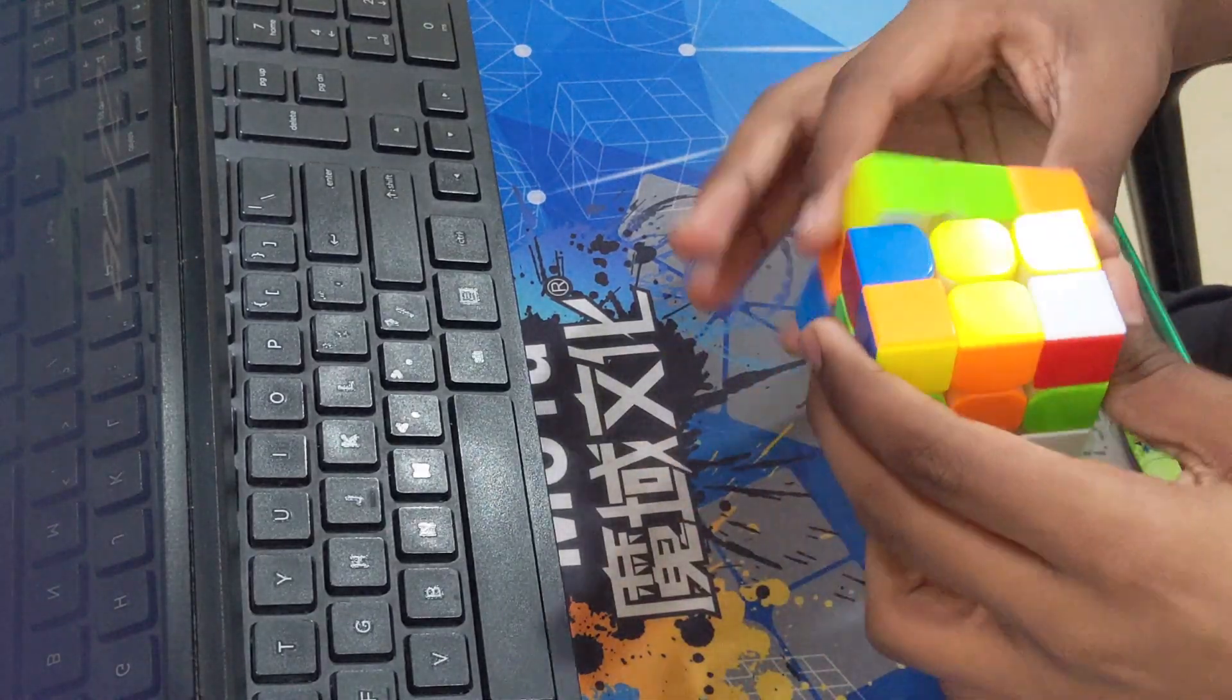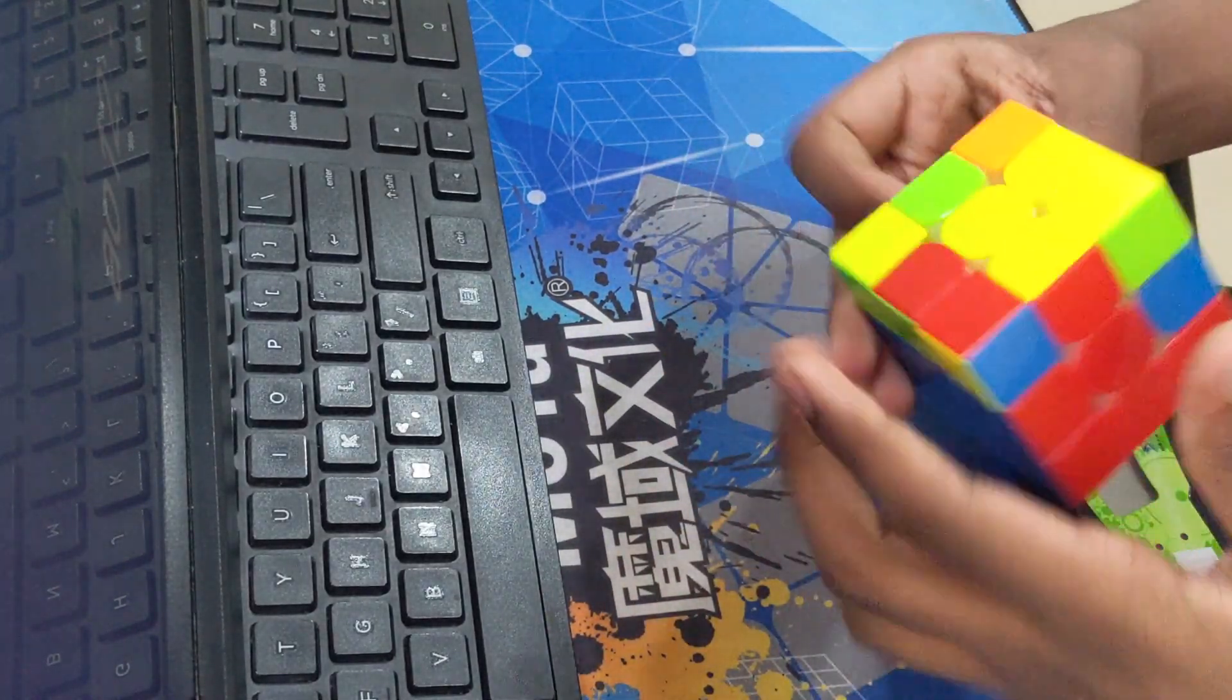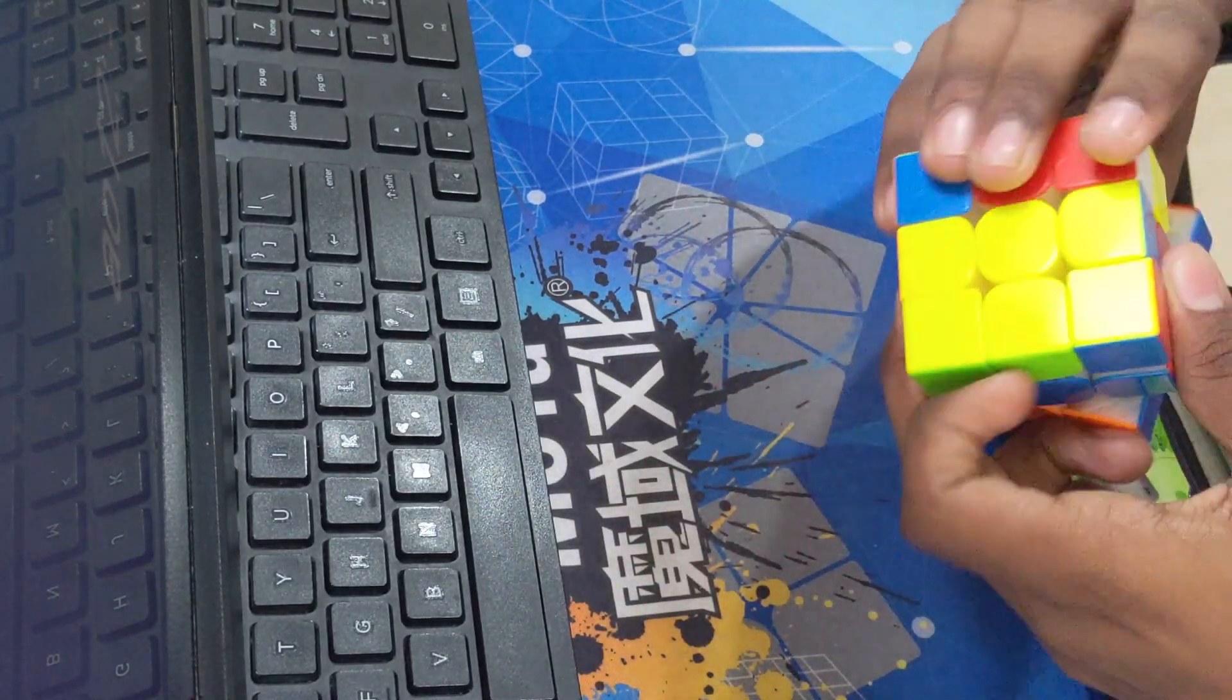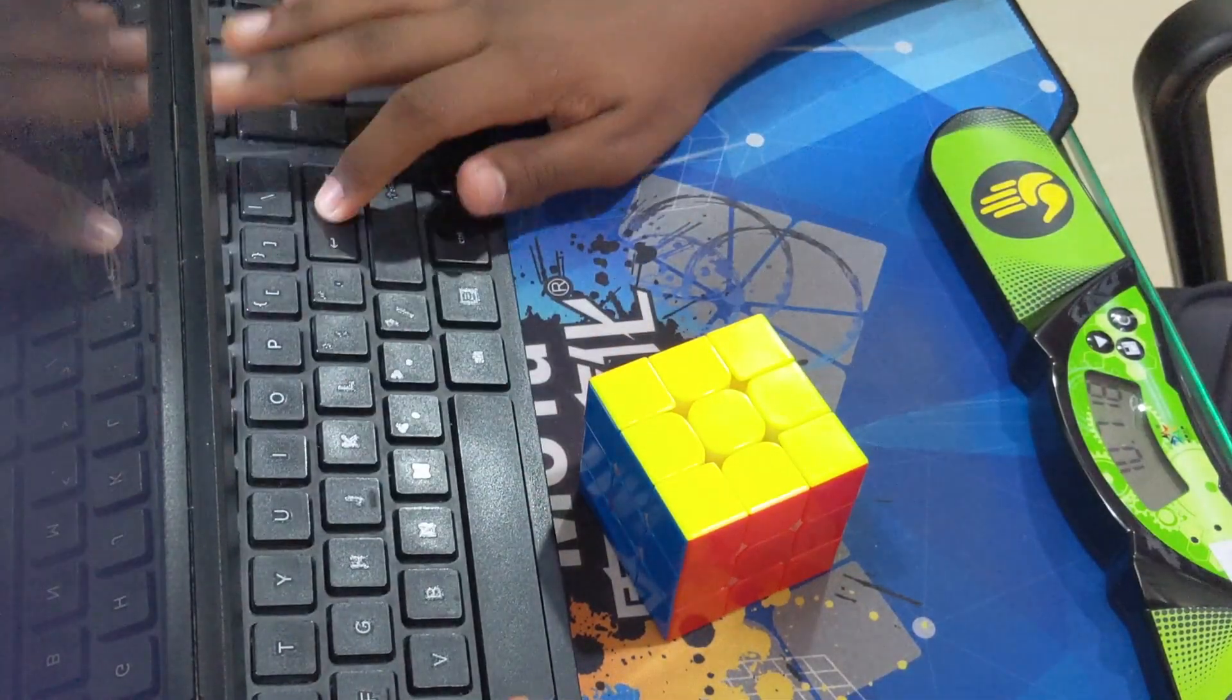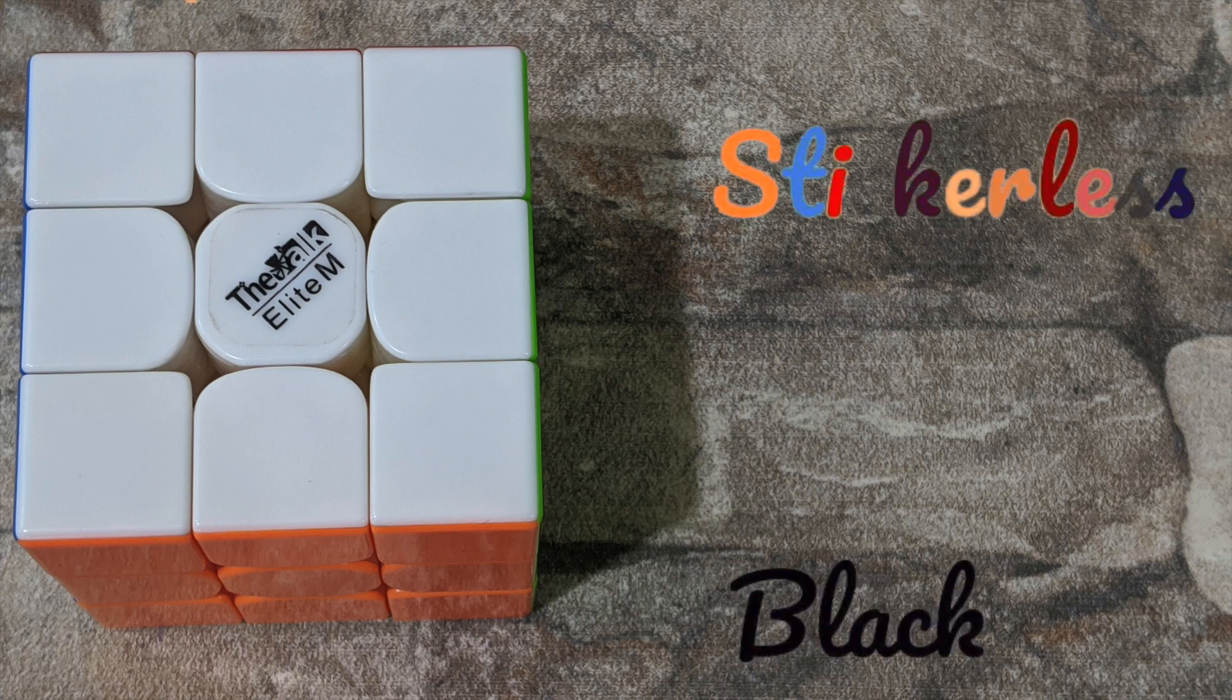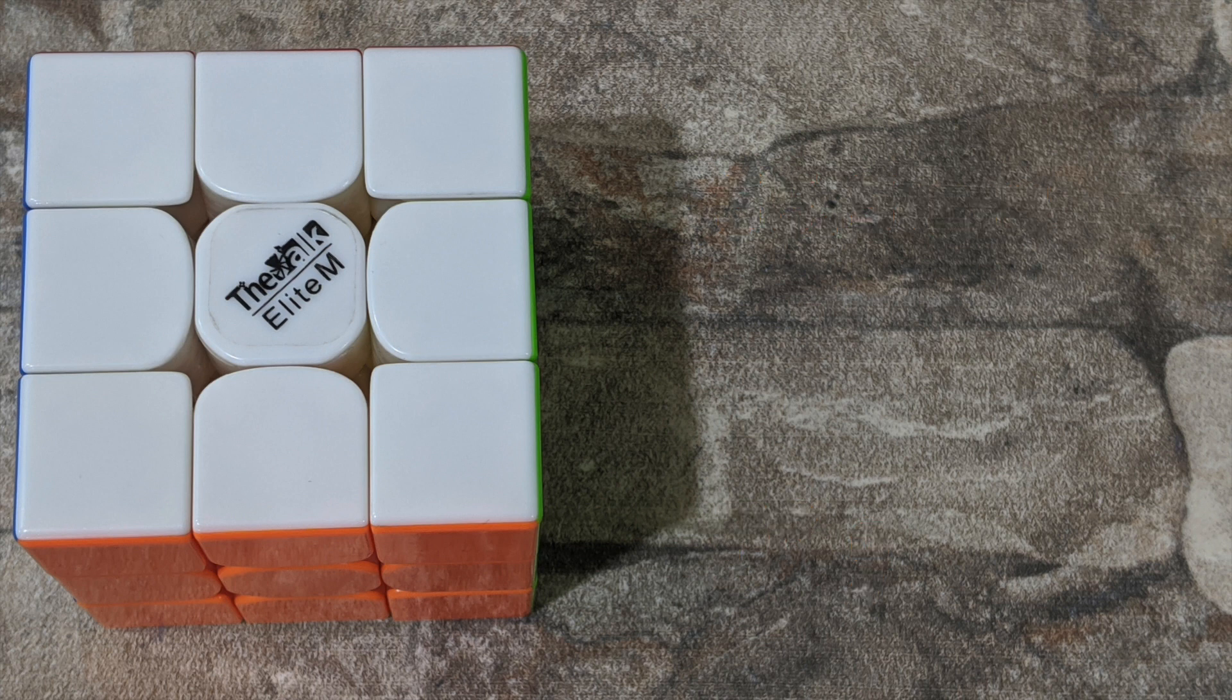Hey, what's up guys! It's your boy Spy Fantastic here, and today we'll be taking a look at the Valk 3 Elite M. So as always, let's start off with the specs of this cube. It's available in stickerless and black, weighs 76 grams, and has an edge length of 55.5 millimeters. Now let's get on to the unboxing experience.